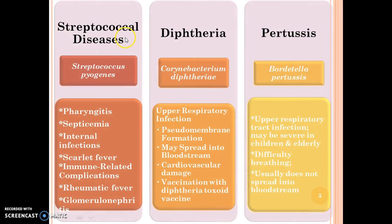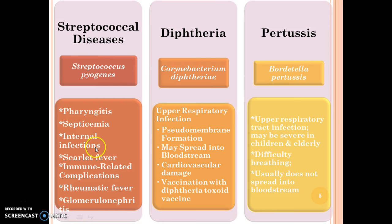Streptococcal disease is caused by Streptococcus pyogenes. The symptoms are pharyngitis, septicemia, internal infections, scarlet fever, and immune-related complications such as rheumatic fever and glomerulonephritis.